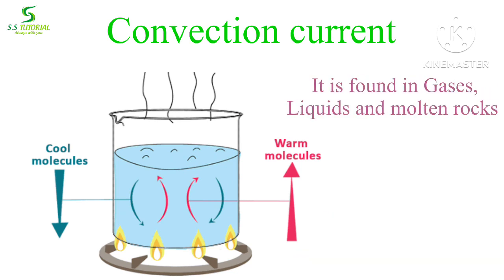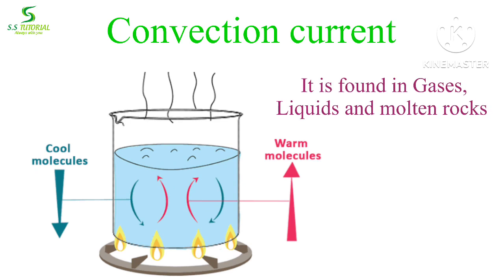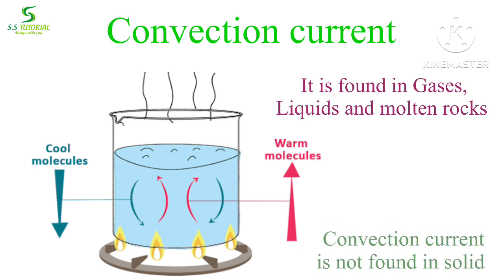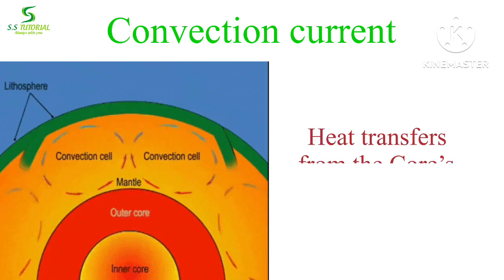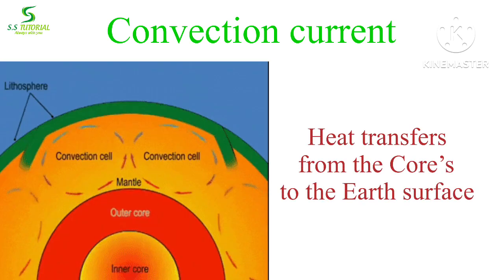Convection current is found in gases, liquids, and molten rocks. We must remember that convection current is not seen in solid material because particles within a solid are fixed in place. Convection current is also seen in the earth's interior where heat transfers from the core to the earth's surface.